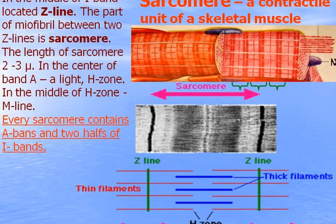In the middle of the A-band you can see the light band called the H-zone. Here only myosin filaments are located. So every sarcomere contains one A-band and two halves of I-bands. This is the sarcomere under the electron microscope, and this is the skeletal muscle fiber under the electron microscope. Myofibrils go in parallel. Myofibrils consist of sarcomeres. You see that Z-lines go through all sarcomeres through myofibrils. You see dark against dark bands and light against light bands, and you see the H-zone in the middle of the A-band.